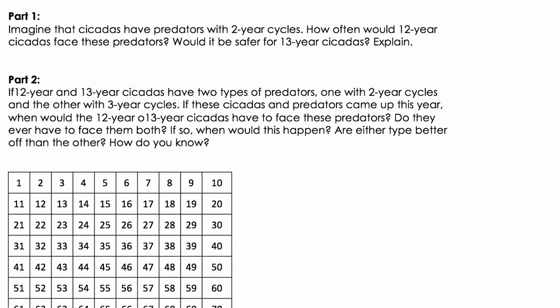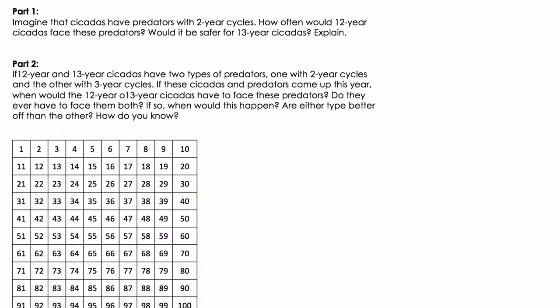Alright, so in this problem we have these cicadas and they are emerging from the ground. In part one we have one type of cicada that emerges every 12 years, and we want to know when will they face their predators. The predators come out of the ground every 2 years. We are starting this problem off by assuming it's a problem about multiples.